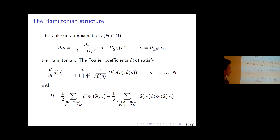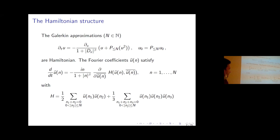To exploit the Hamiltonian structure, we use the Galerkin approximation: project the nonlinearity onto the first N Fourier modes. The Fourier coefficients satisfy an equation in the same Hamiltonian formulation as in the first slide. The negative Fourier modes are determined by the condition that u is real.